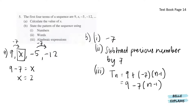For the words, we'll just write subtract previous number by 7. And for the algebraic expression, we take Tn, the first term, plus the difference, n minus 1. Since here is positive and negative, that will give us minus 7.